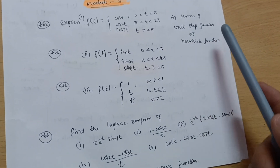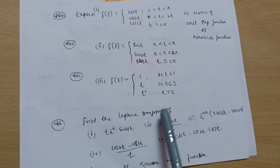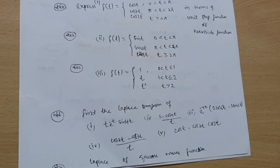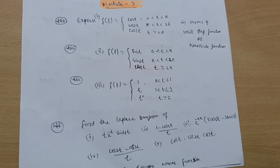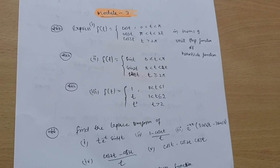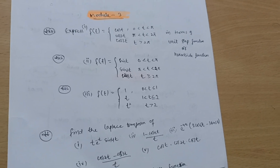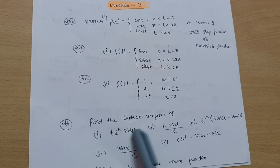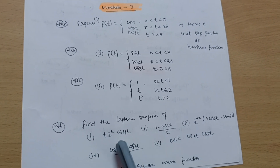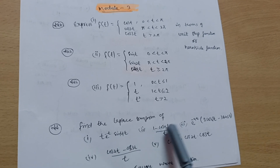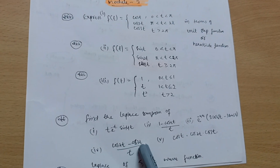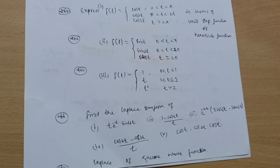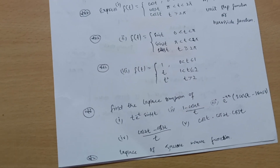Next, find the Laplace transform — remember formulas and properties of Laplace on one A4 sheet so you can apply them easily in the exam. Important functions from question papers include: e^(-t) sin(4t), (1 − cos(at))/t, e^(-4t)(2cos(6t) − 3sin(5t)), (cos 2t − cos 3t)/t, and cos(t)·cos(2t)·cos(3t). Practice these most important ones so you can handle Module 3.